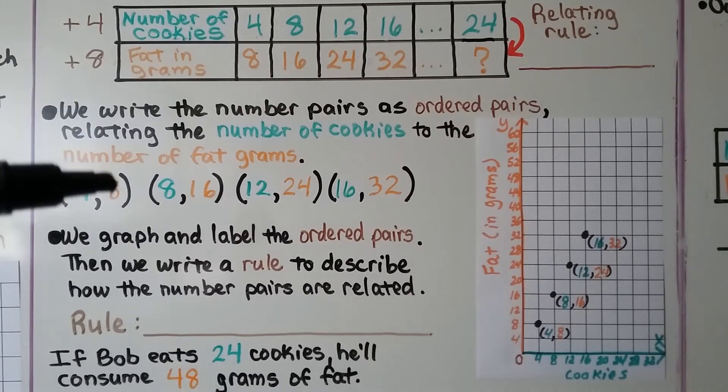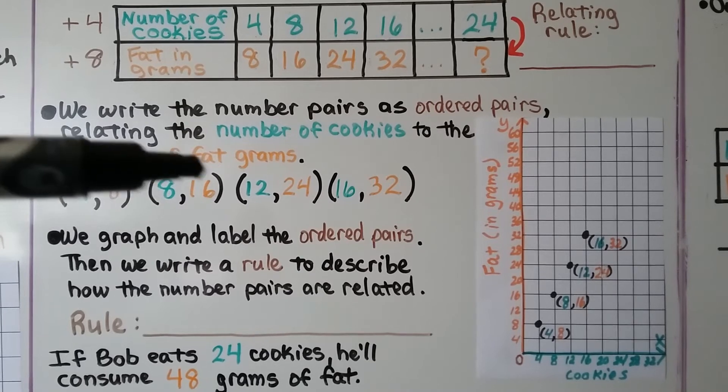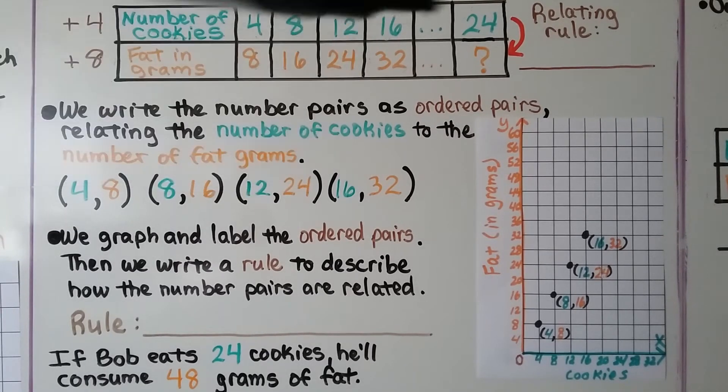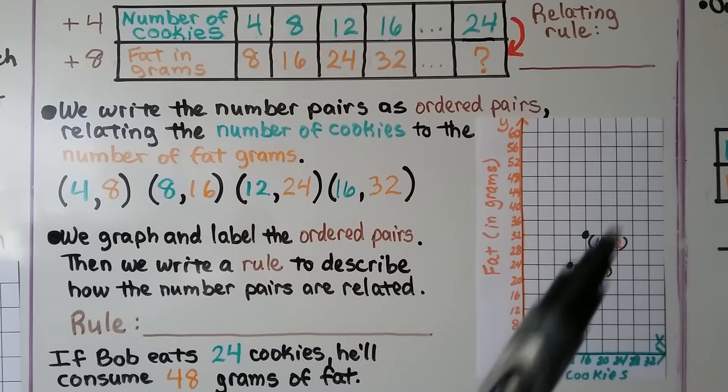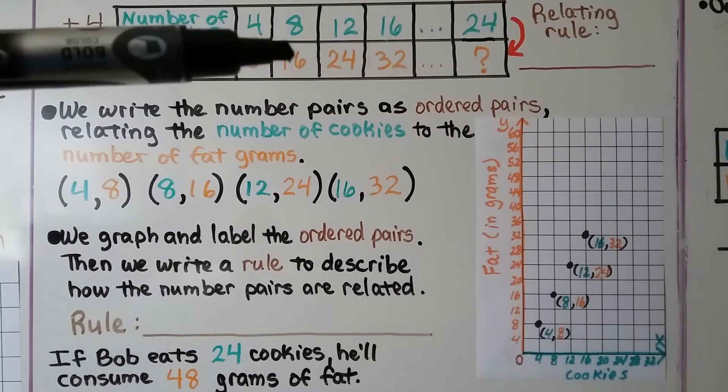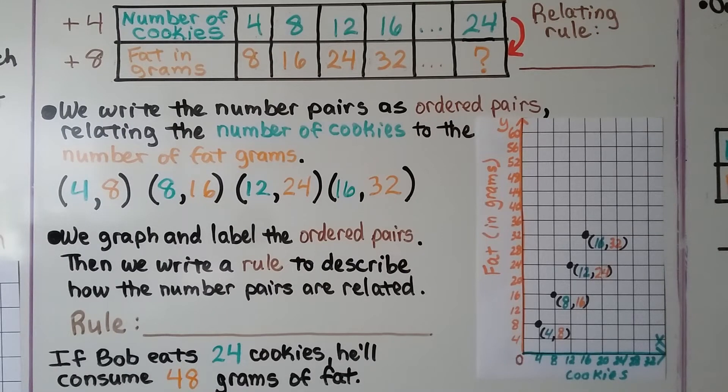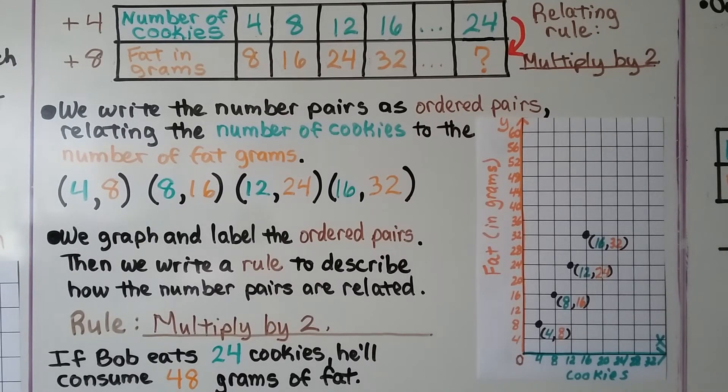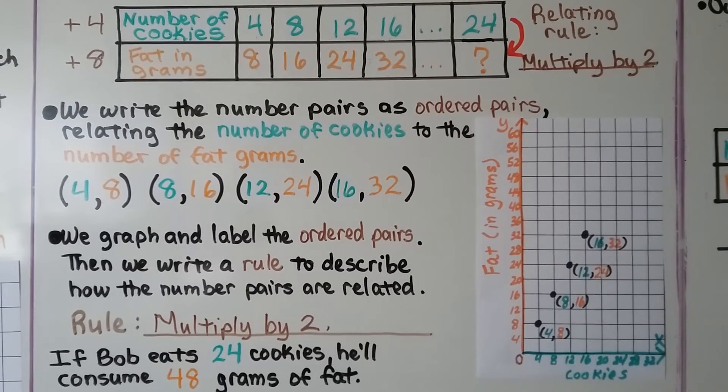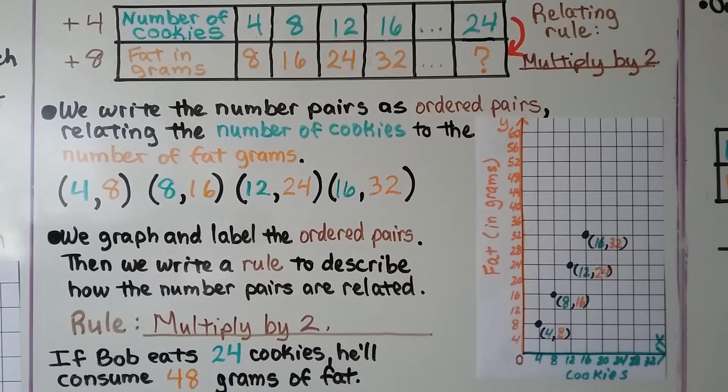We write the number pairs as ordered pairs relating the number of cookies to the number of fat grams. We have a 4 and 8, so we have a 4 and 8. We have an 8 and a 16, so we have an 8 and a 16. 12, 24. 16, 32. We need to find 24. We graph and label the ordered pairs. Then we write a rule to describe how the number pairs are related. Can you see how they're related? How 4 is related to 8 or 8 is related to 16? If you said multiply by 2, you're right. If Bob eats 24 cookies, he'll consume 48 grams of fat because 24 times 2 is equal to 48.